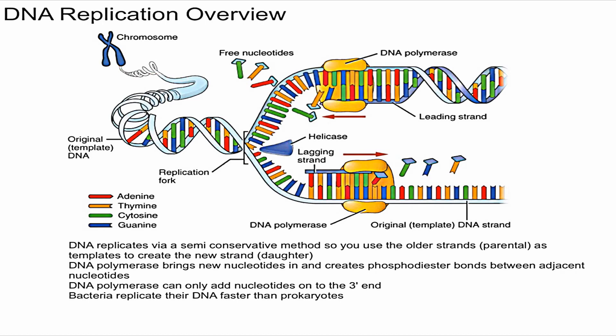So what does that mean? We know that DNA is double-stranded — we can see here there is a double-stranded DNA. The semi-conservative method essentially means you're going to rip apart this DNA.